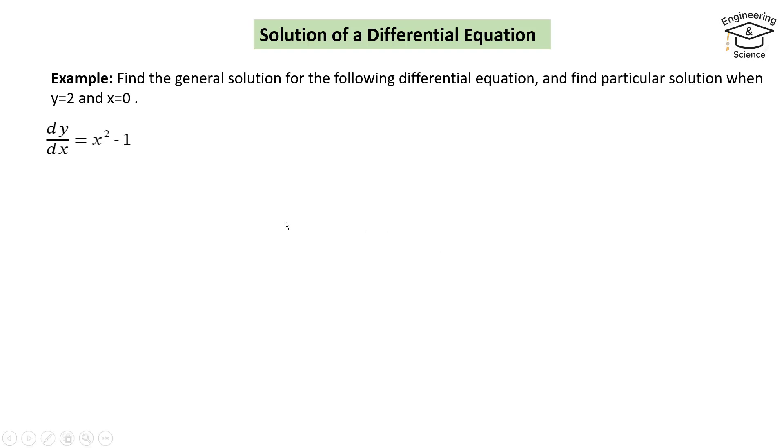Let us explain the concept through a simple example. For this example, we have to find the general solution and then a particular solution when y equal to 2 and x equal to 0.